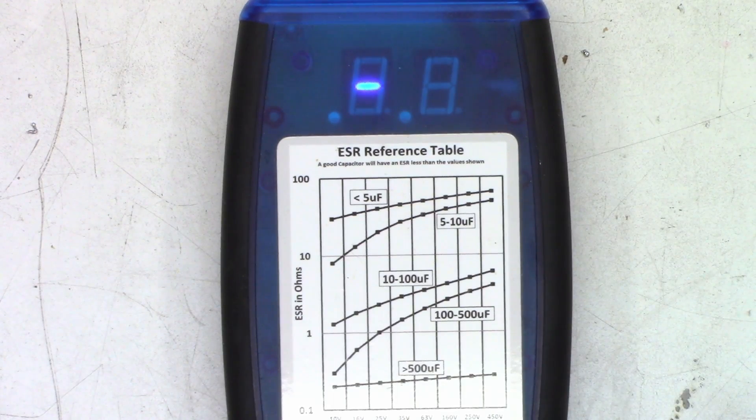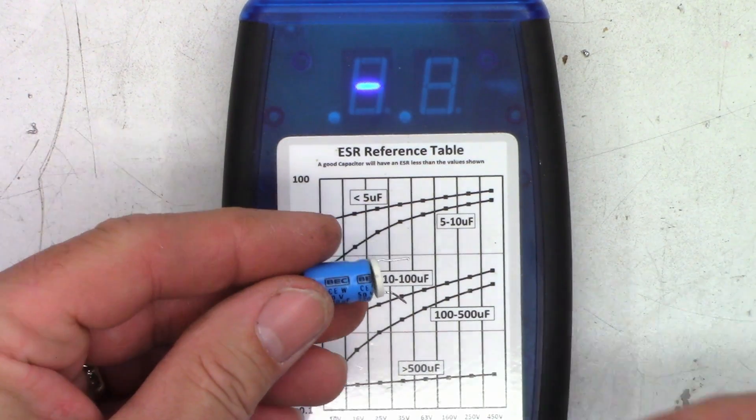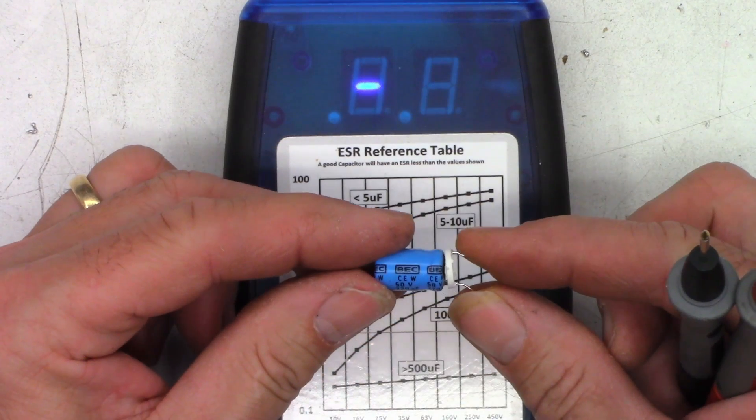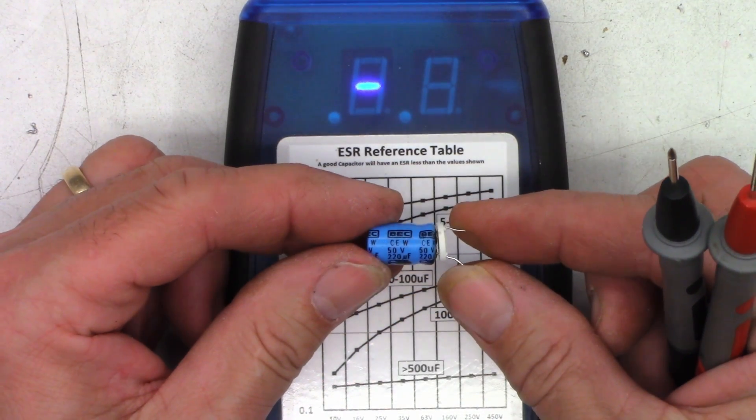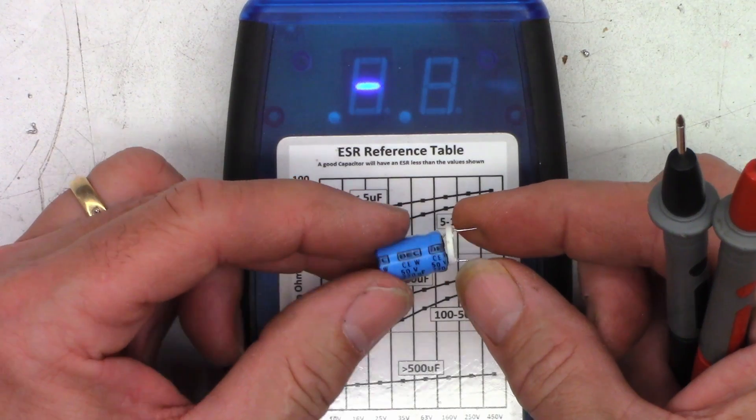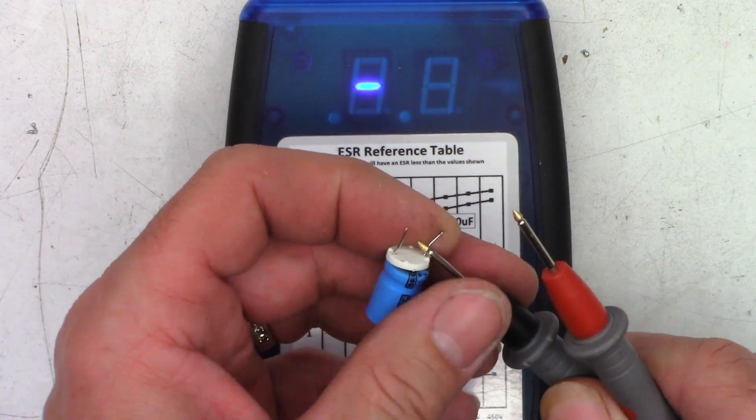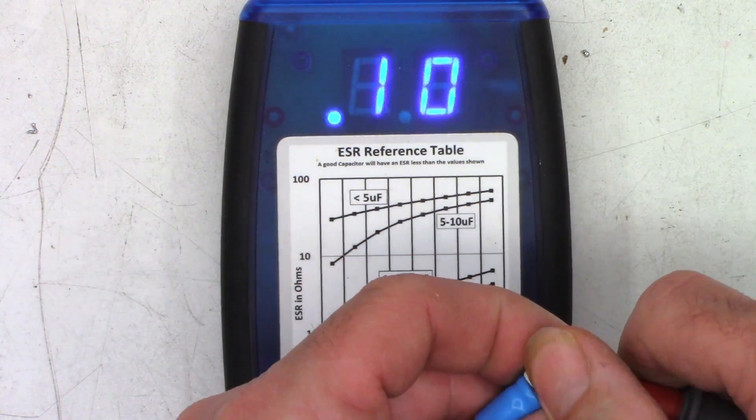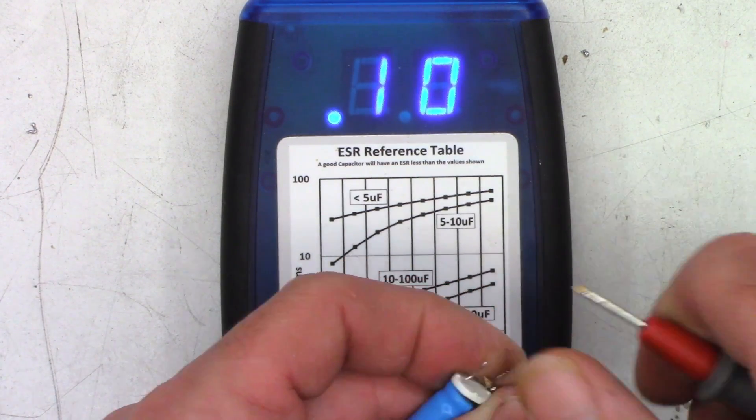All right, just like last time, a little bonus footage. Let's go ahead and check all these caps. These are BEC capacitors. Not quite sure who that actually is, but once again, 85 degree rated caps, 85 Celsius.